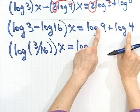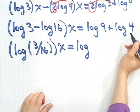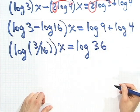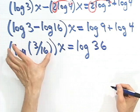and if I'm adding logs, I can multiply them. So in fact, this is just a 9 times 4, which is the 36. If I divide through by this thing, that's the number I get what x equals. So x, it turns out,